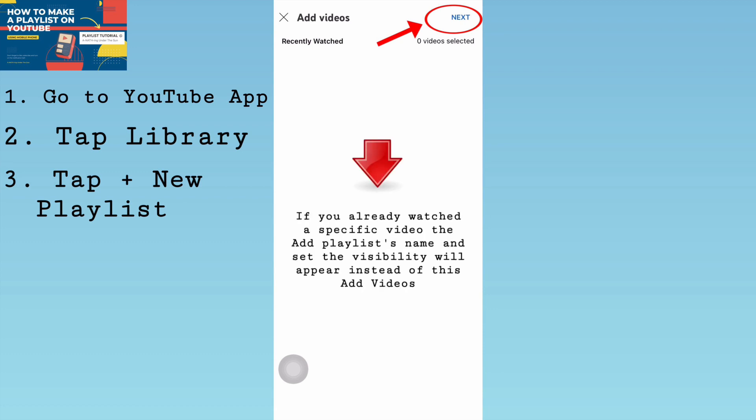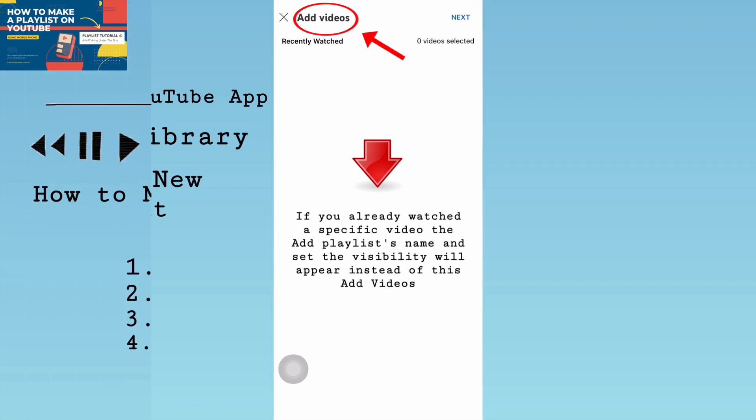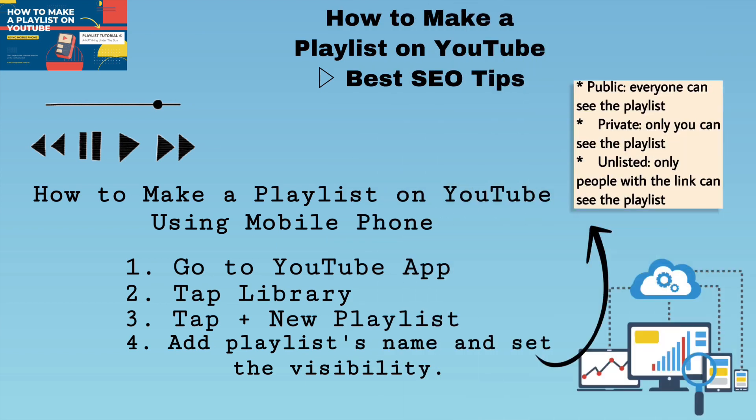However, if you have already watched a specific video, the Add Playlist Name and Set Visibility options will appear instead of those other videos. Number four: add playlist name and set the visibility.